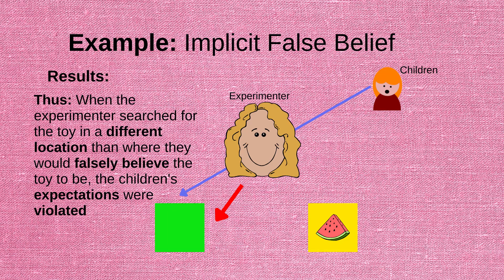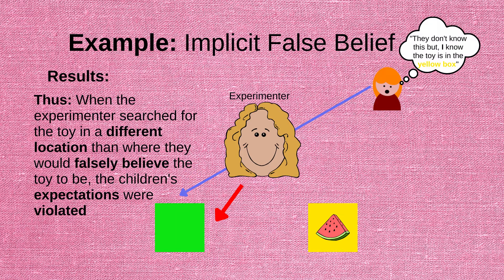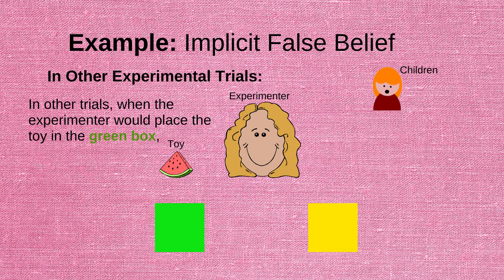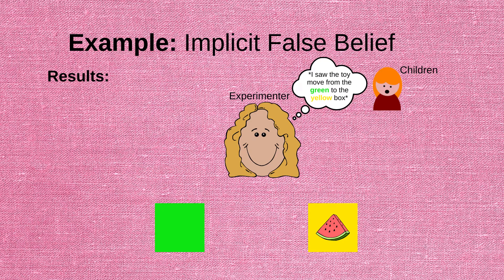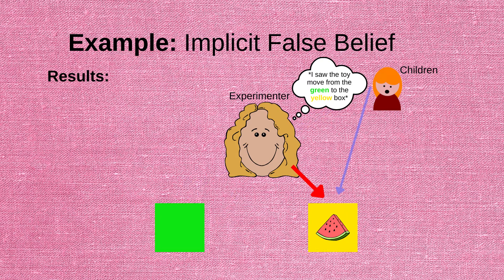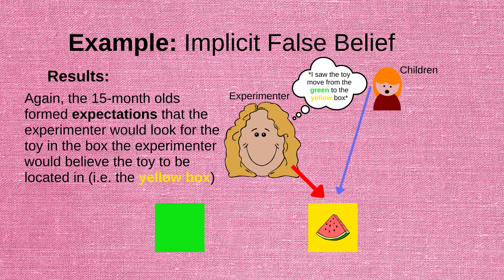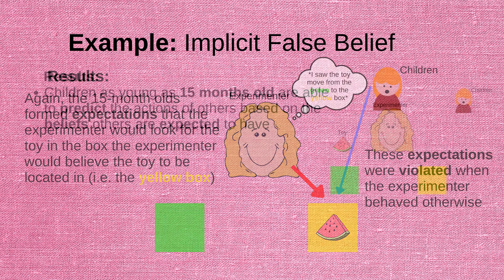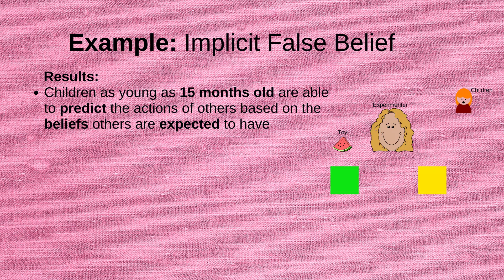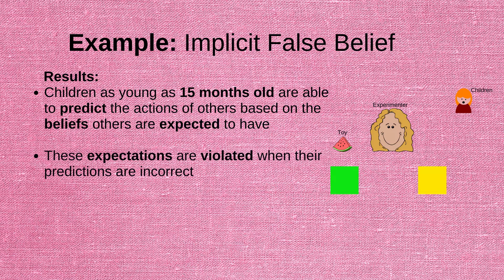In other words, when the experimenter looked for the toy in a different location than where they would have the false belief that the toy was still located, the children's expectations were violated — even though the child knew the toy had changed location from the green box to the yellow one. In other experimental trials, the experimenter placed the toy in the green box but now watched as the toy was moved to the yellow one. In these trials, the results were reversed: when the experimenter reached for the toy in the green box, children looked at this box for a significantly longer period of time. This shows that the children formed an expectation that the experimenter would look for the toy where they believed it was located. These results indicate that children as young as 15 months old are able to predict the actions of others based on the beliefs they are expected to have, and these expectations are violated when their predictions are incorrect.